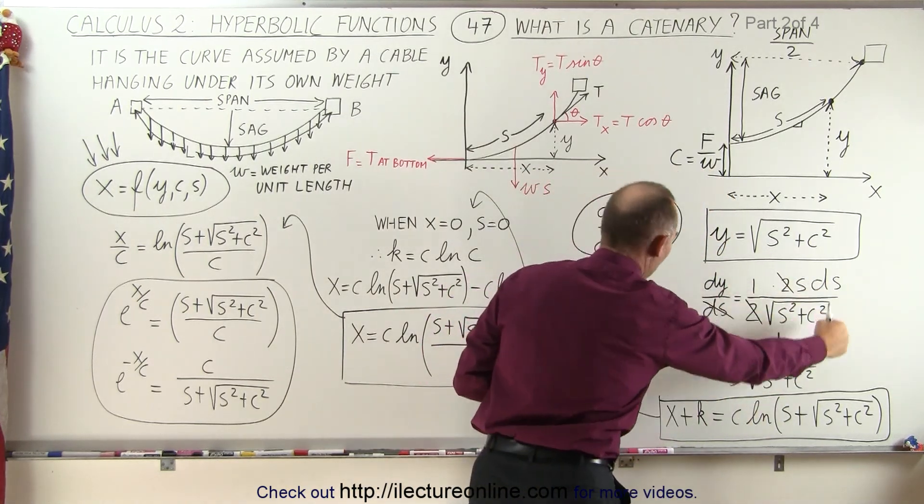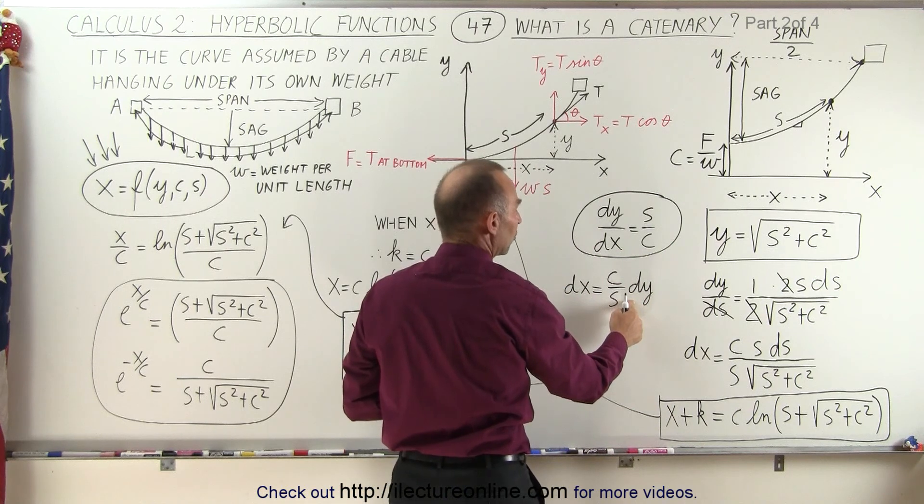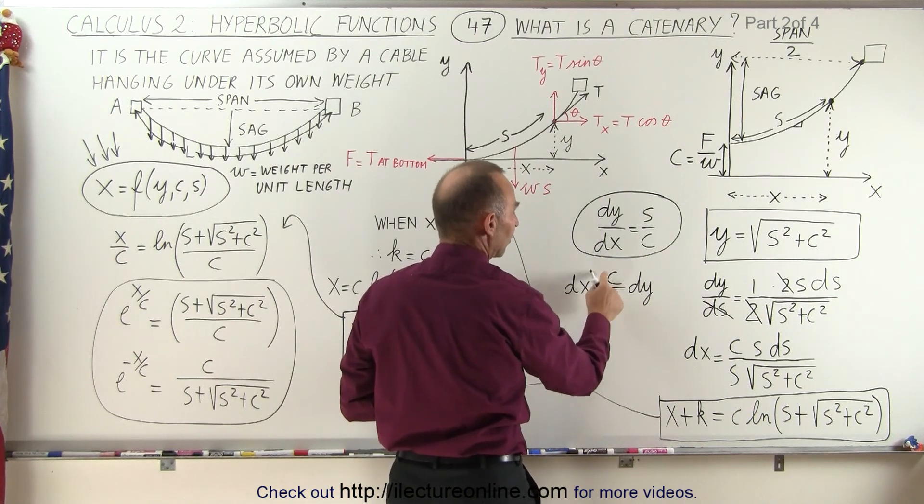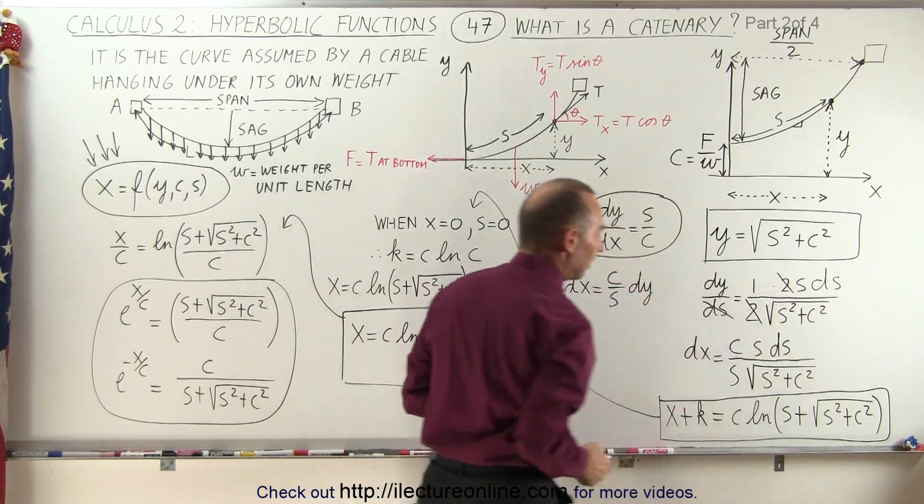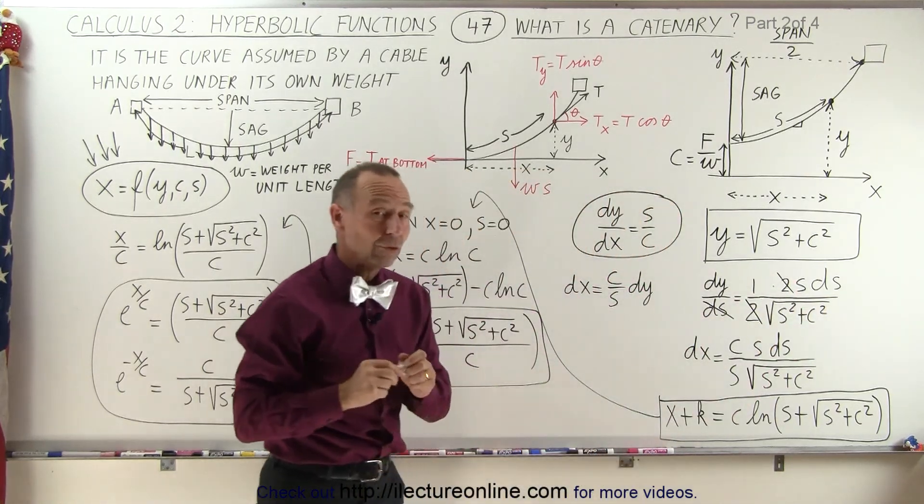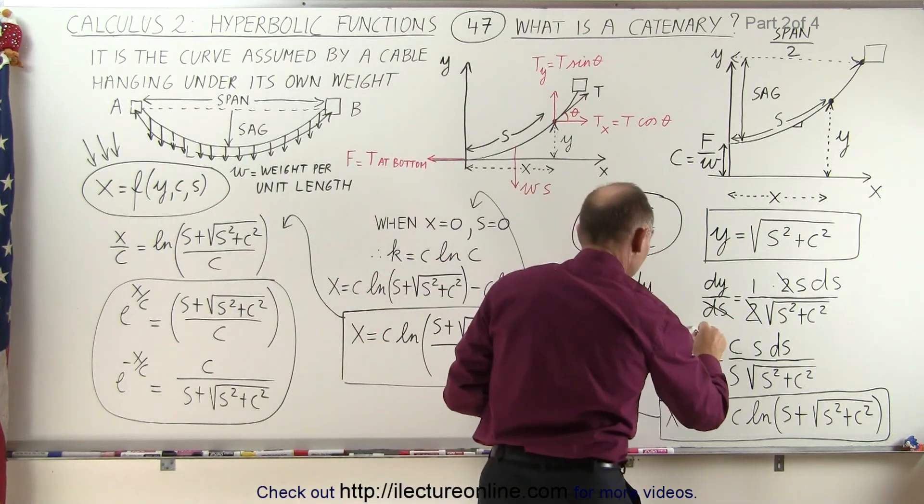Now we take that expression for dy and plug it into this equation. So now we get dx is equal to c over s times dy, which is now this expression that we had up there.